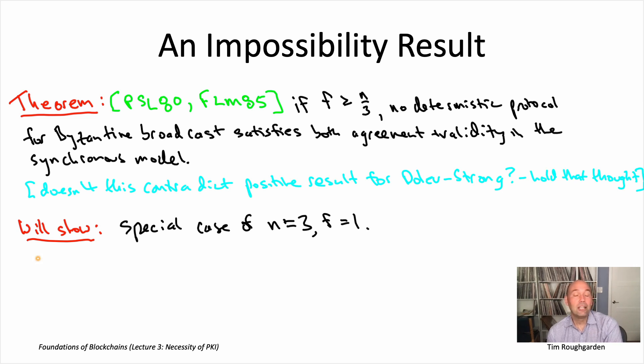So any N, any number of nodes, any number of Byzantine nodes that is at least one third N - basically, you can group the nodes into three different sets and treat them as basically like super nodes, and then just piggyback on the proof we're about to give for the N equals three, F equals one case.